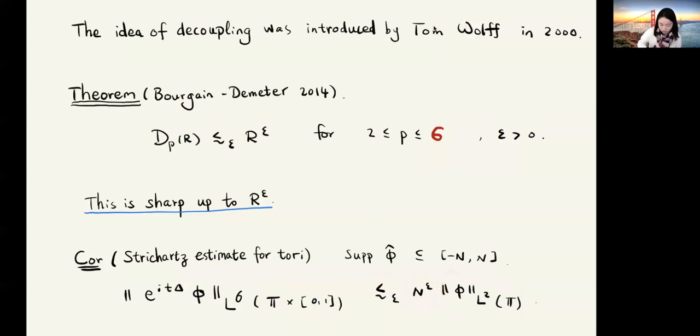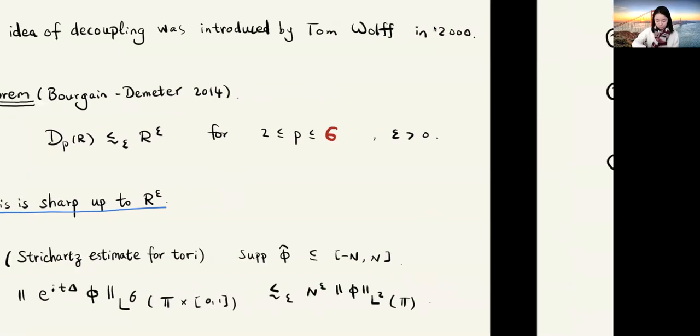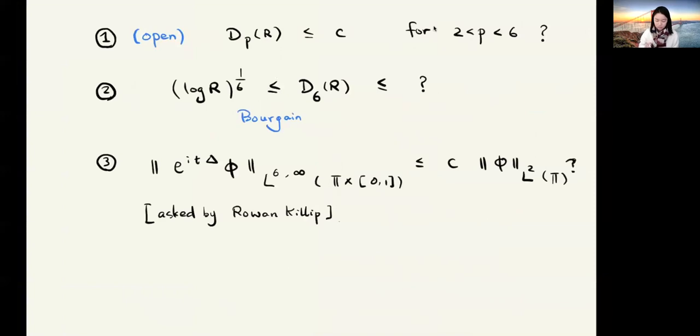This N to the epsilon is a consequence of the r to the epsilon. There are a few questions regarding those epsilons. For example, there is an open problem about whether we can bound d_p(r) by an absolute constant C for p between 2 and 6. When p equals to 2, this is known using the Plancherel theorem and L^2 orthogonality.